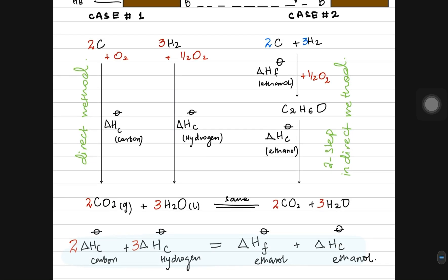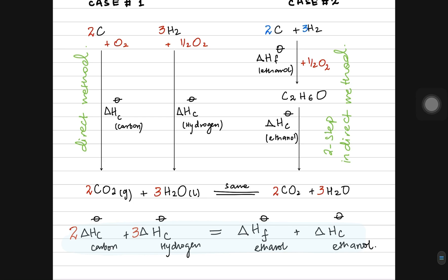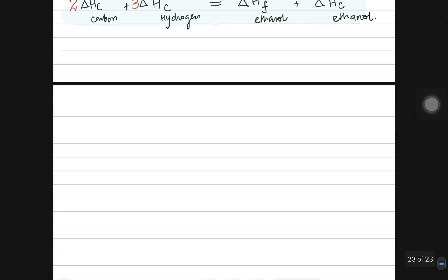We should also be able to draw the Hess cycle for the reaction. In case one we start with two moles of carbon and three moles of hydrogen to make two moles of carbon dioxide and three moles of water. We were using oxygen throughout the process, so oxygen is written as a reactant — we needed 3.5 moles of oxygen.